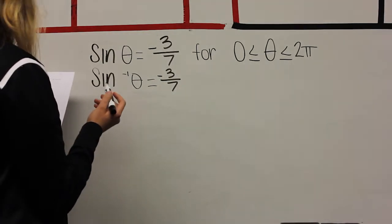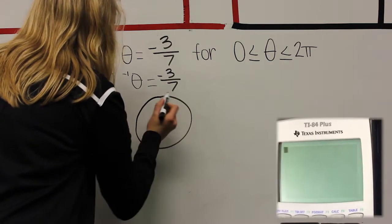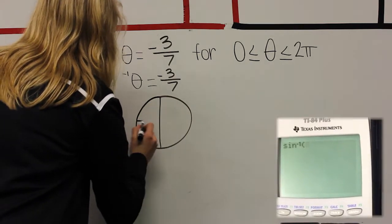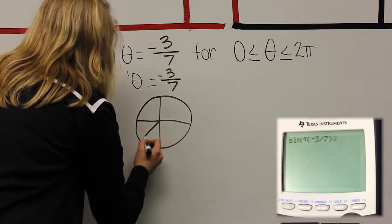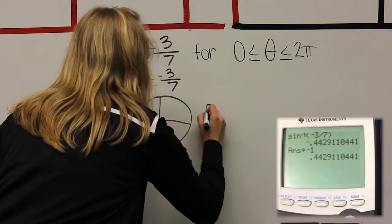Sign of negative 3 divided by 7. Find the inverse sign of negative 3 divided by 7, multiply that answer by negative 1, subtract it from 2 pi, save the previous answer into your calculator and add that to pi.